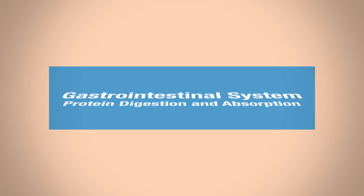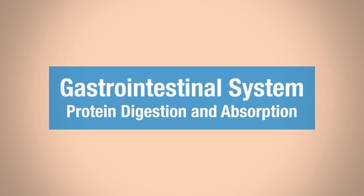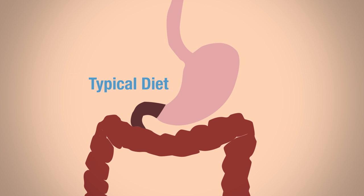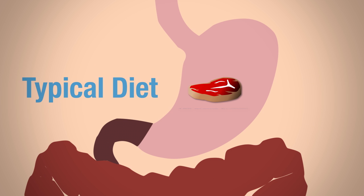In this video lecture on the gastrointestinal system, we are going to focus on protein digestion and absorption. In a typical diet, we consume about 125 grams per day of protein. These aren't values to memorize — they're provided in case you're curious about how much we actually ingest.